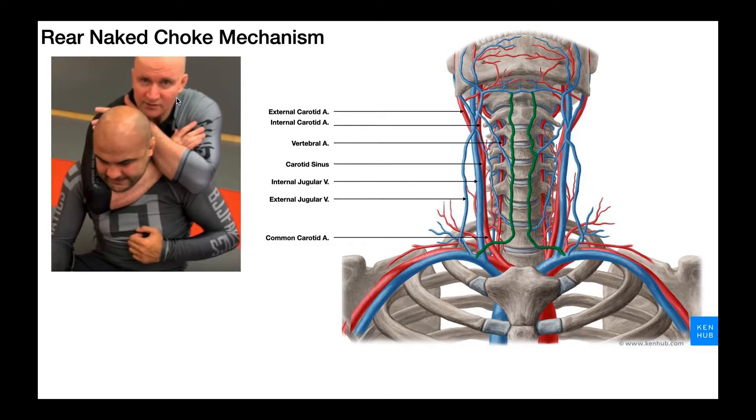Now, when this guy is doing the rear naked choke on his opponent, he can use varying amounts of force to compress these blood vessels. However, it's not really so much the force that's important. It's really the technique, meaning the arm placement. If the arms are placed correctly around the opponent's neck, it doesn't take a huge amount of force to compress these blood vessels.